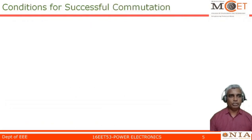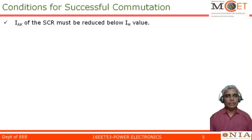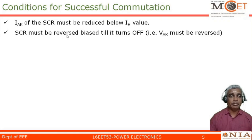Now, let us look into the conditions to be satisfied for successful commutation. The first condition is the anode-to-cathode current of an SCR must be reduced to a value called IH, that is the holding current value. So the first condition is to make the anode current reduce to a value called as holding current. IAK should be reduced to a value lesser than the holding current.